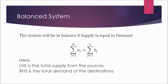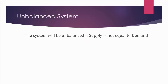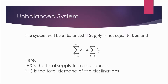The system will be in balance if supply equals demand — that is, summation of ai equals summation of bj. If summation of ai is not equal to summation of bj, the system will be unbalanced. We generally have techniques to solve balanced transportation problems, so if we encounter an unbalanced system, we convert it using dummy sources and dummy destinations, which we will learn in the next class.